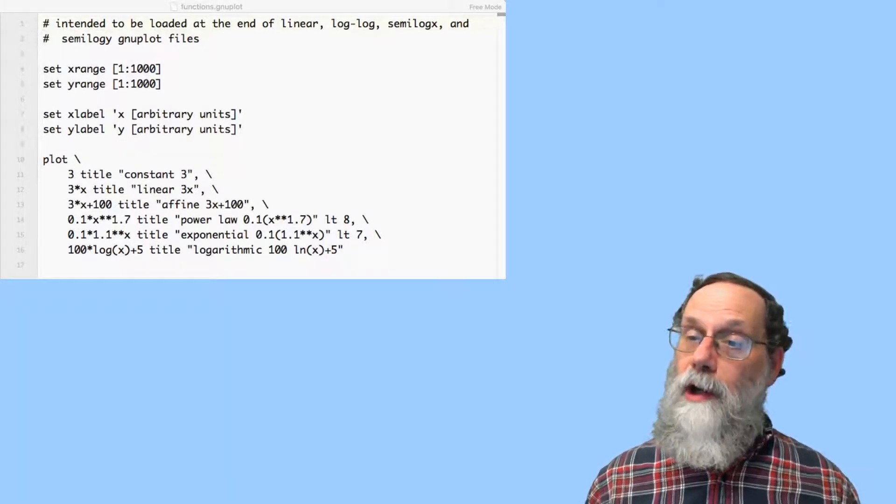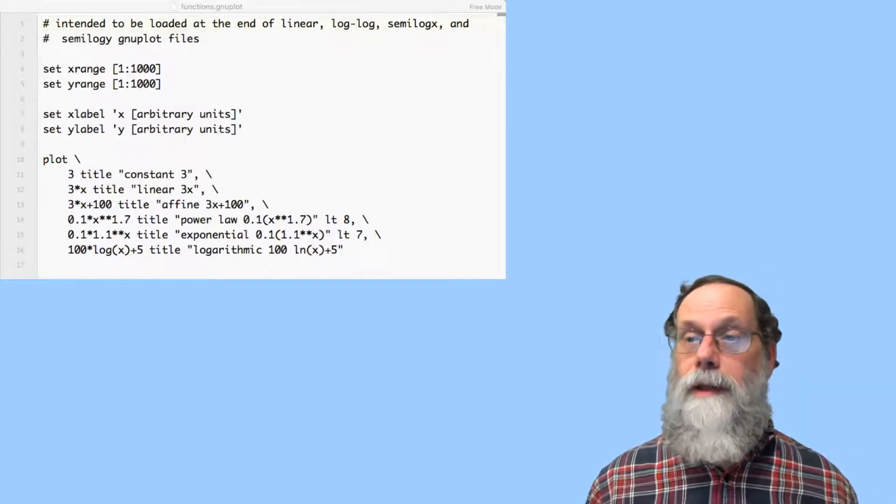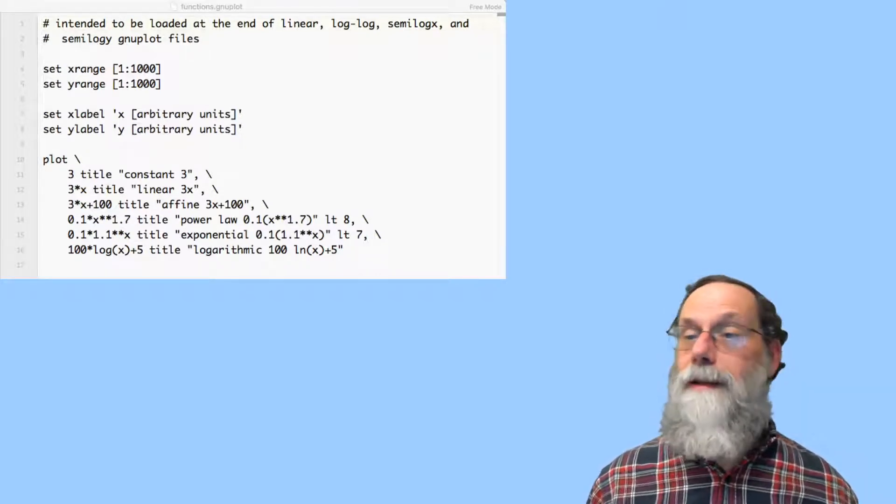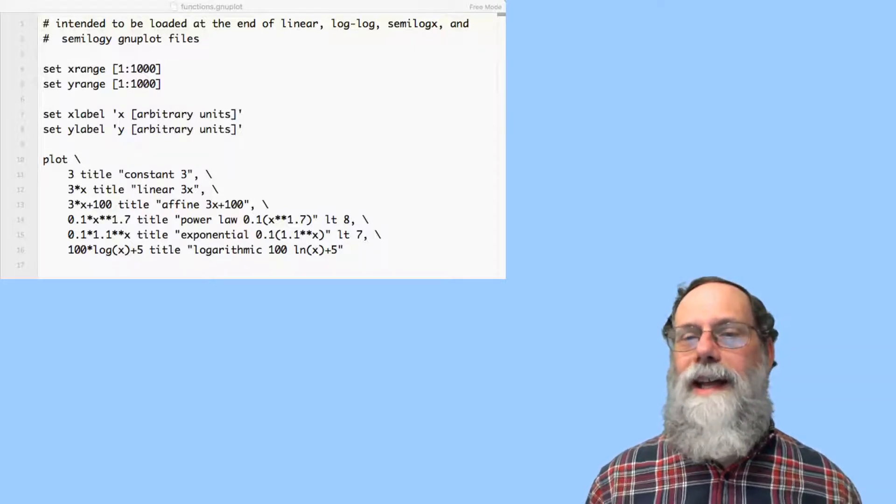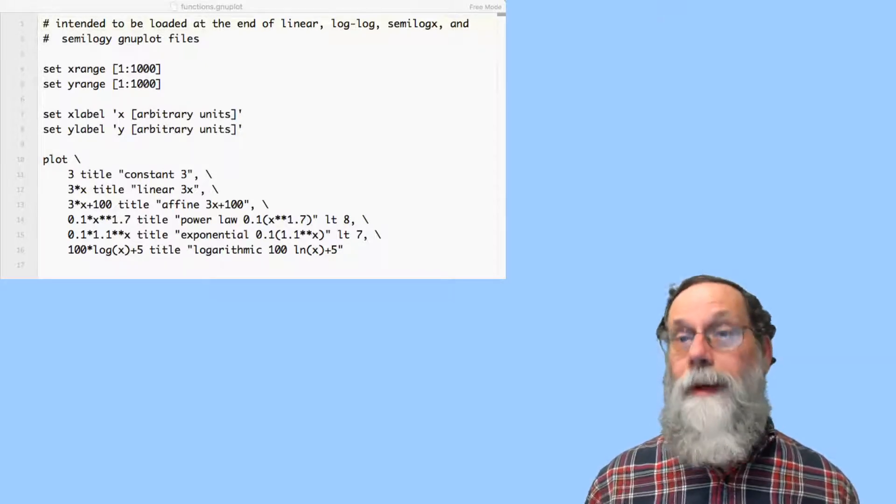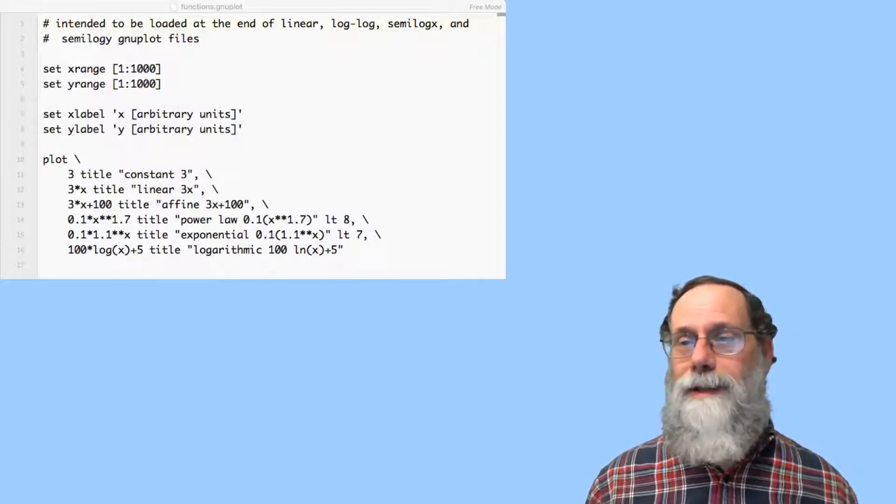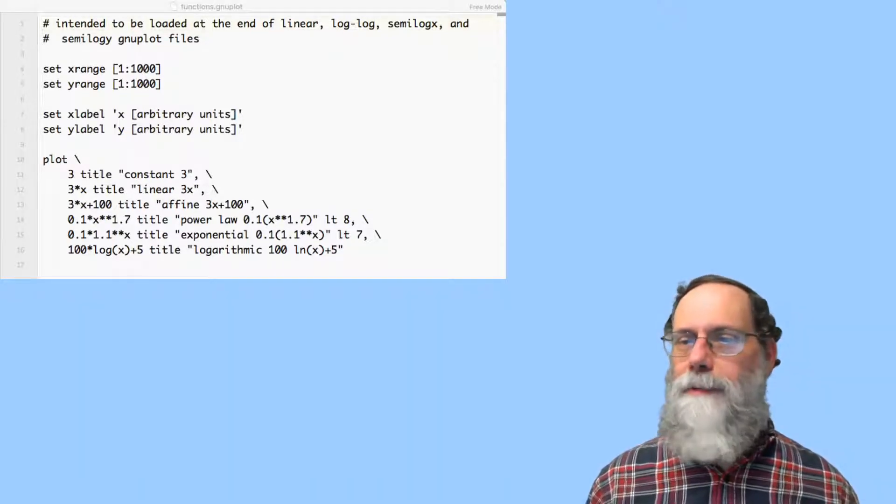Incidentally, the star star here is the way in Gnuplot that you write exponentiation. Because the up arrow sign, the caret, that you use in some notations means something different in Gnuplot. It's the bitwise exclusive or, which you'll never have any use for. But that's what they picked because they grabbed their symbols from the C programming language.